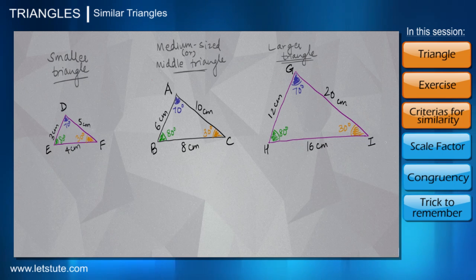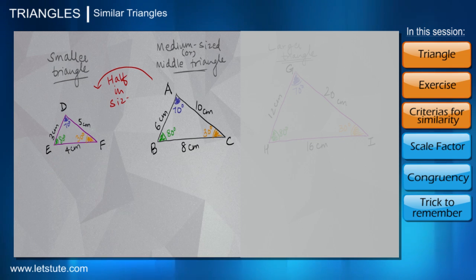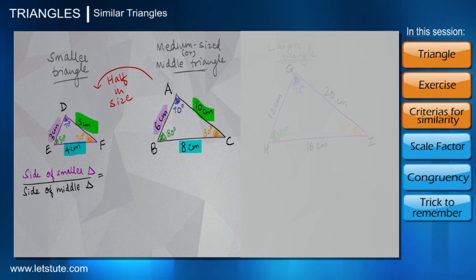How about naming the smaller triangle as DEF and the larger triangle as GHI? Let's just ignore the larger triangle for a moment. Quite clearly we can see the smaller triangle DEF is actually half in size of the medium triangle ABC, and I am saying that because all of its sides are actually half in length as compared to the sides of the triangle ABC.